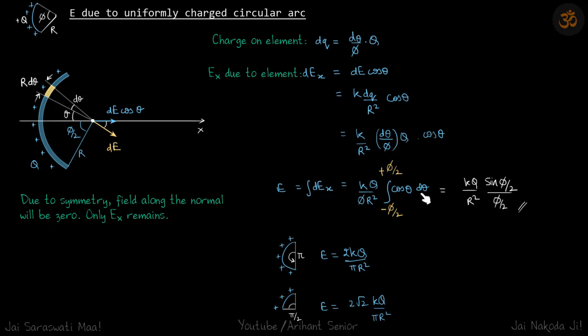We will get a term of dθ, so we're going to integrate it from -φ/2 to +φ/2 because we are taking this angle as positive theta. We'll get our answer: kq/r² times sin(φ/2) divided by φ/2.